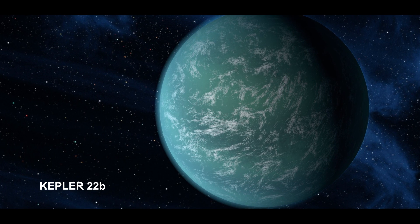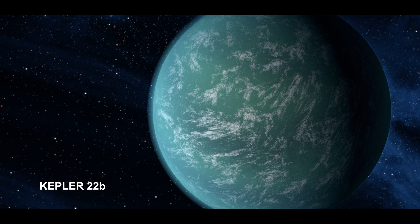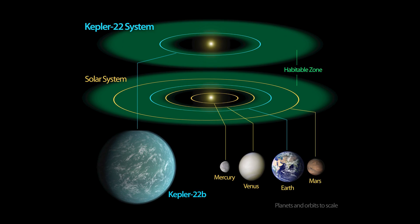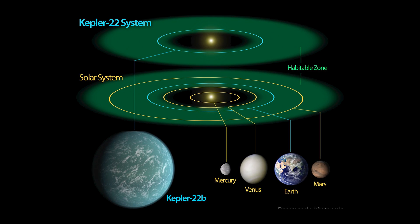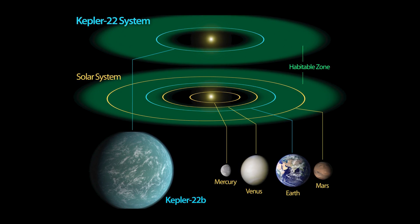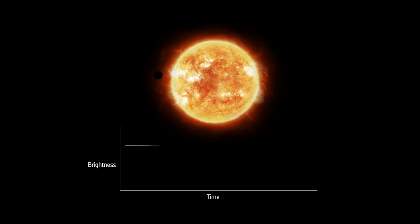Kepler-22b, an exoplanet 2.4 times Earth's diameter, was also found in the habitable zone around a star 600 light-years away in the constellation of Cygnus. As the name suggests, the planet was discovered with the Kepler Space Telescope and was the first planet in the habitable zone to be detected by the transit method.